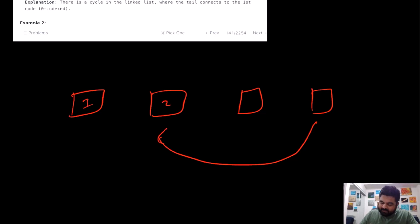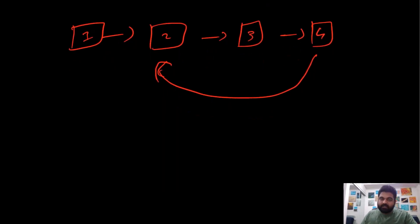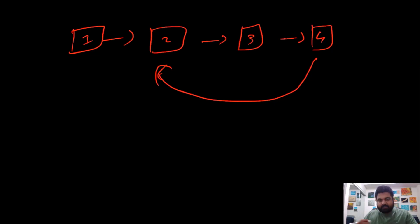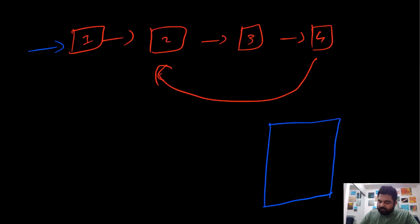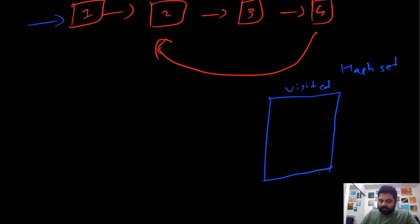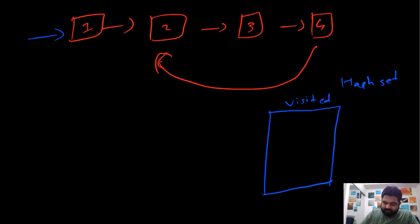Suppose we are given a linked list like this, and we can clearly see that there exists a loop between node four and node two. The question is how do we detect that there exists a cycle? A first solution that comes to mind is one we have used in different graph problems. What we can do is create another data structure called a hash set, and inside this hash set we are going to keep track of all the visited nodes we have passed so far. Initially, we check whether the node we are currently at exists inside this visited hash set. If it does not exist, we add it and keep moving forward.